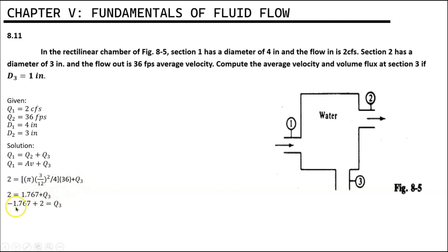By simplifying this equation, we get negative 1.76 plus 2 equals Q3. So we have the value of Q3 is equal to 0.233 CFS.